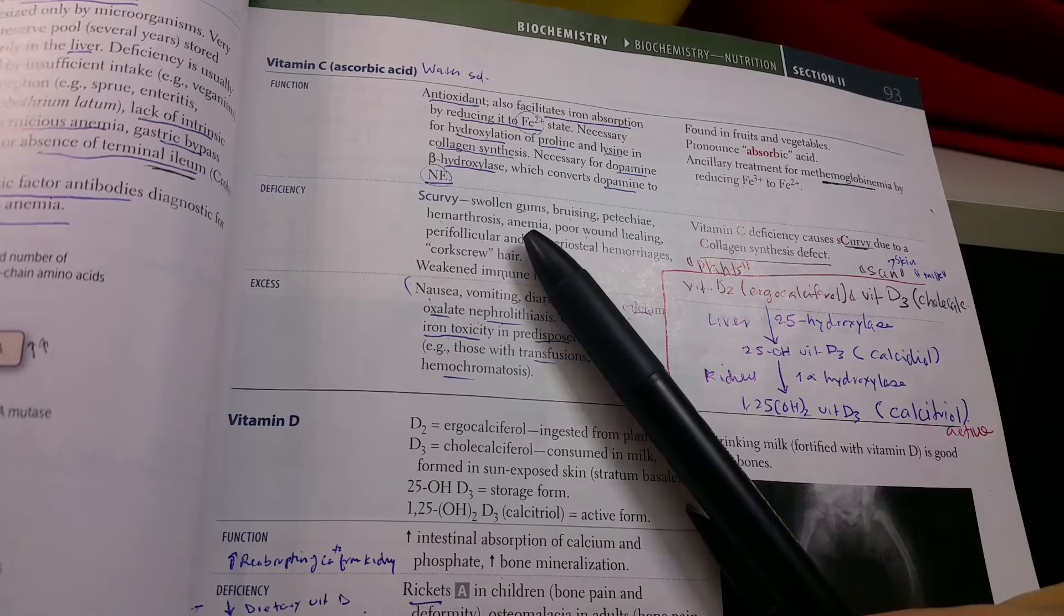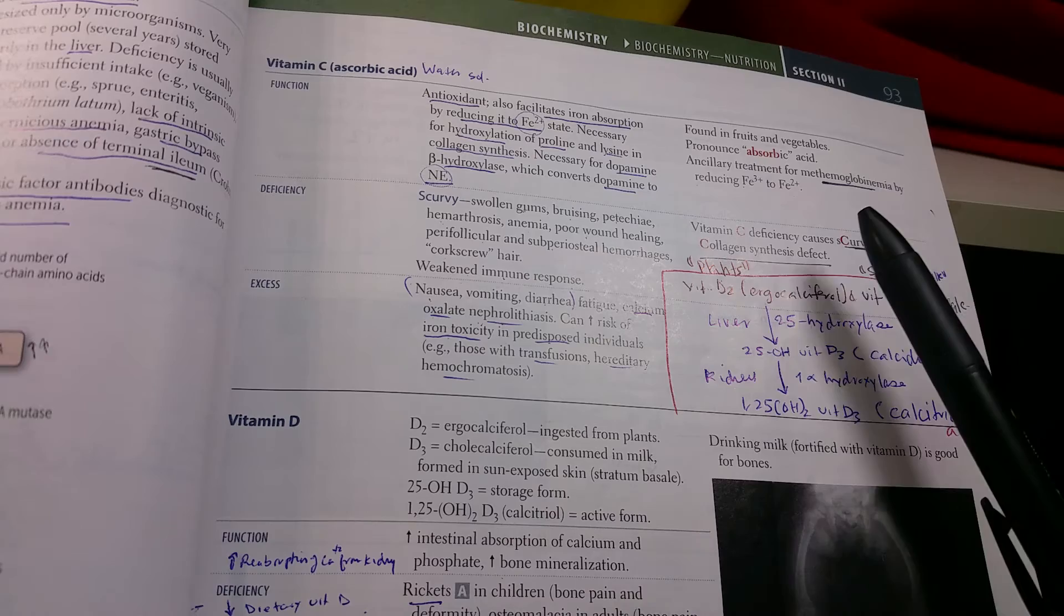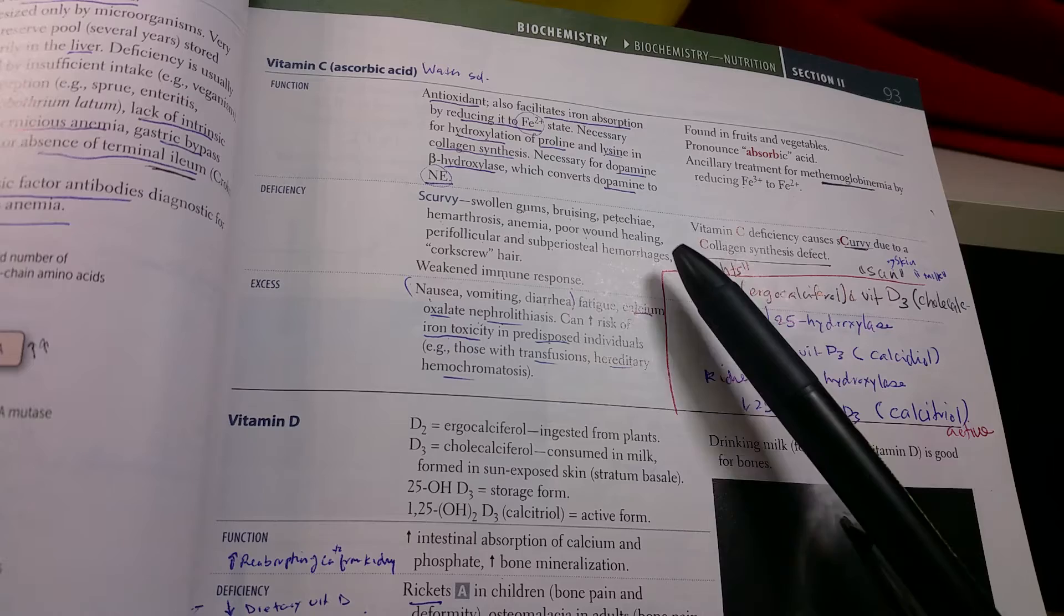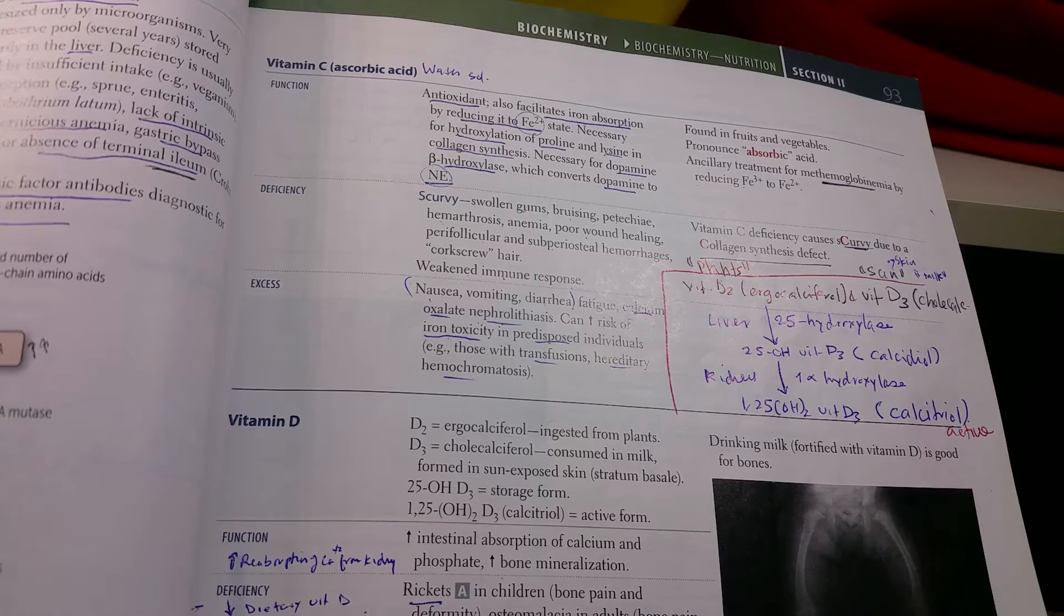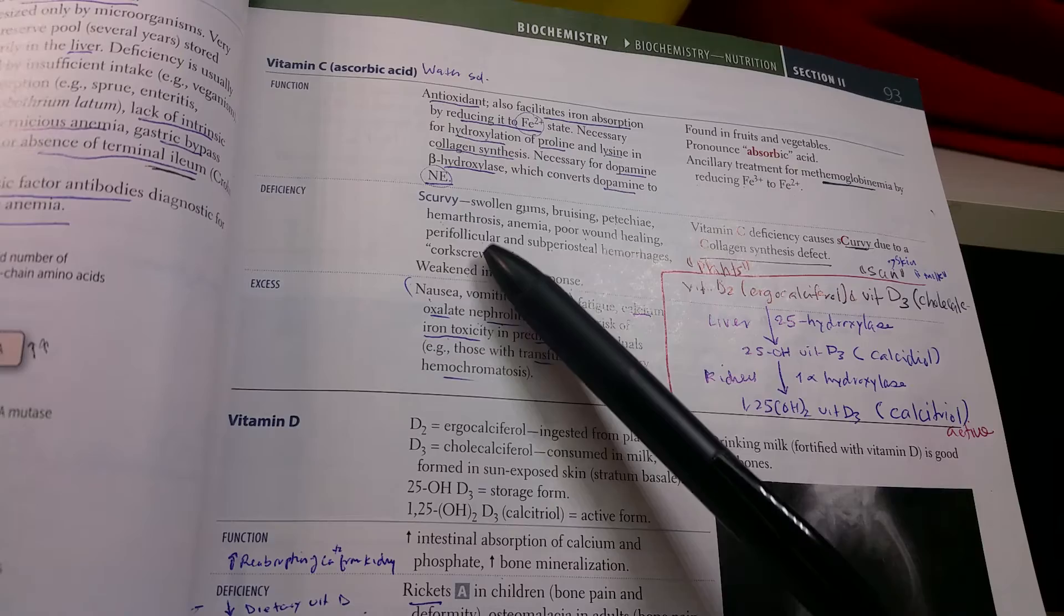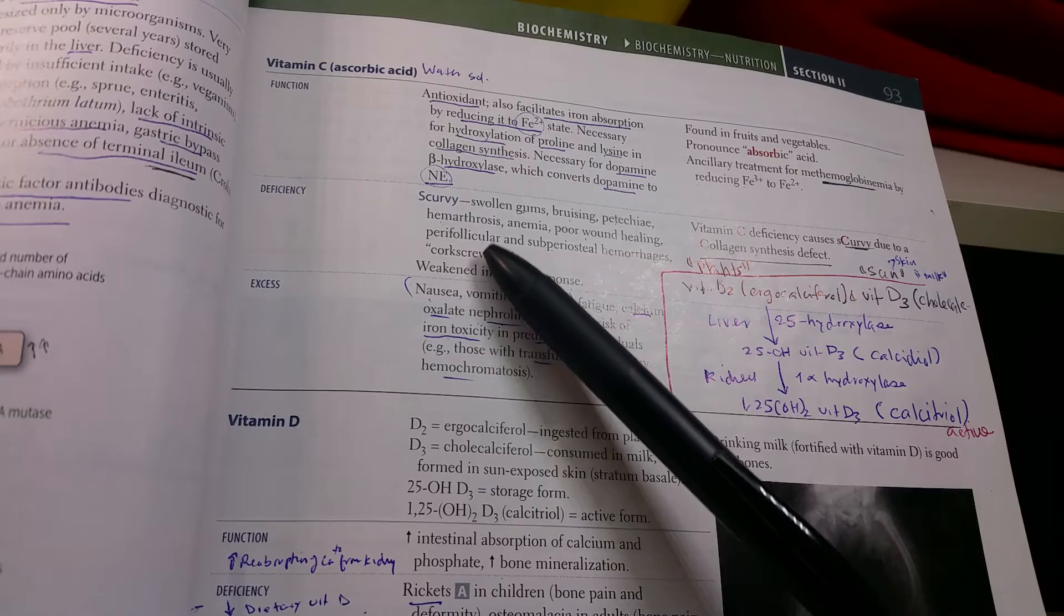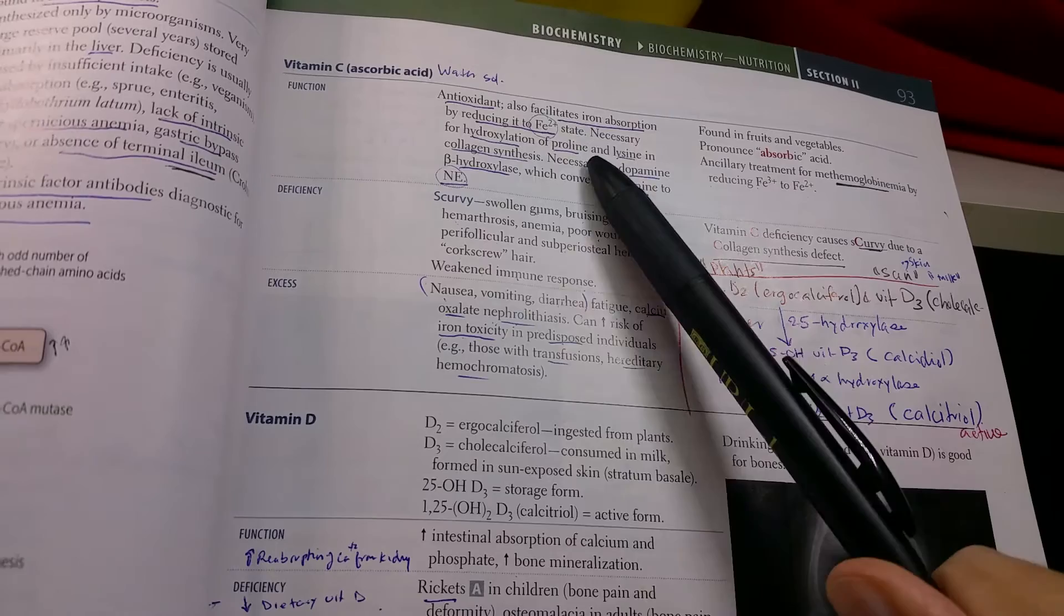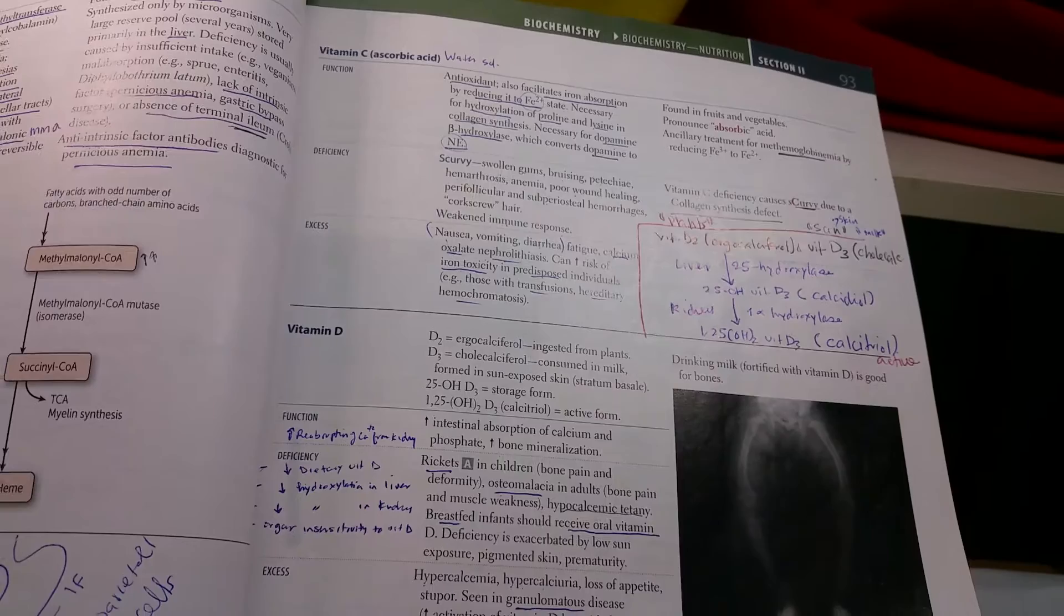The deficiency causes something called scurvy. There's swollen gums, bruising, petechiae, hemorrhage, poor wound healing. Scurvy is due to collagen synthesis defect from vitamin C deficiency. The excess causes nausea, vomiting, diarrhea, and iron toxicity. The excess is not very important, but know the deficiency, scurvy, and know the functions of vitamin C: antioxidant, reducing for facilitating iron absorption, and the role in collagen, which is very important.